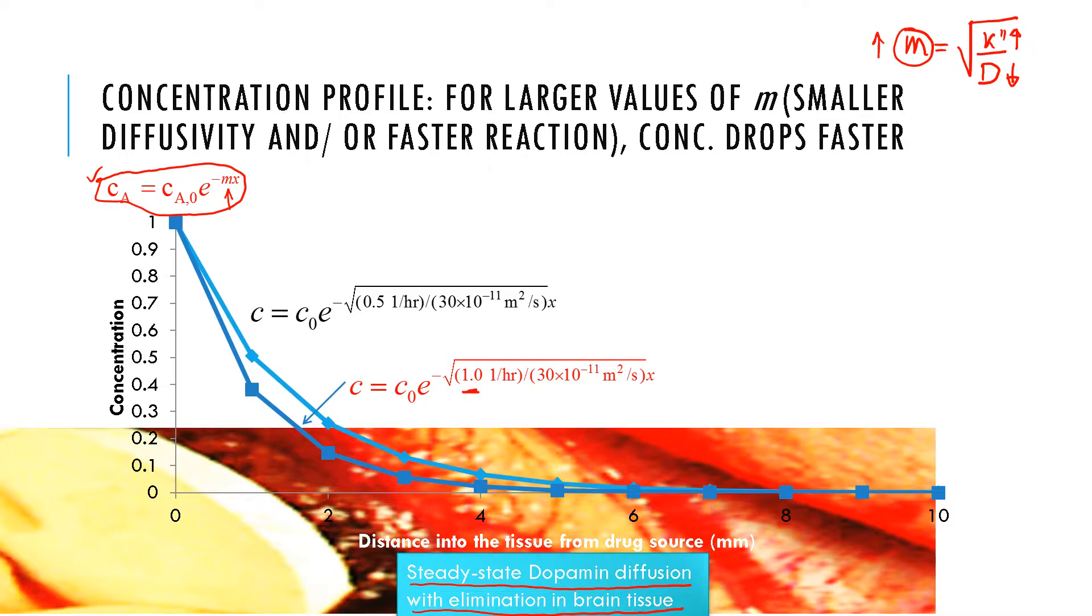What are the implications when M is higher, for a situation where the drug is being used up faster or it is slow diffusing? Concentration at a distance can reduce drastically. For higher values of M, there's quite a bit of reduction in concentration, so if we need a particular concentration of drug for efficacy at a certain distance, that may not happen.